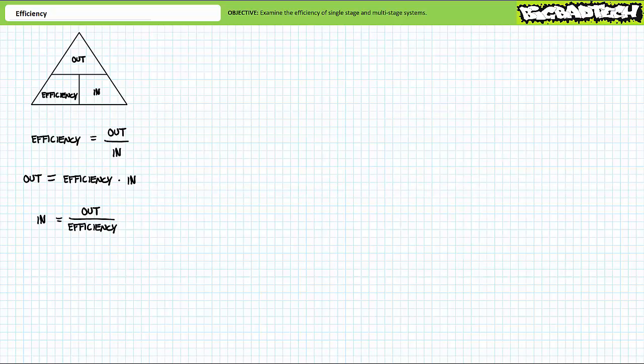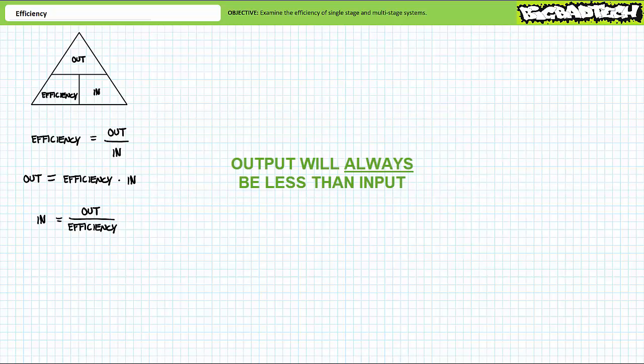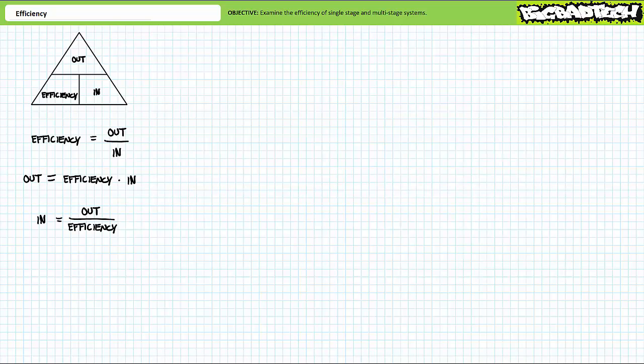Given that a portion of input is always misdirected towards losses, useful output will always be less than input, never greater. If your calculations result in output greater than input or an efficiency greater than 100%, you are doing it wrong and need to reassess your data. Given that energy in a closed system can neither be created nor destroyed but only changed in form, all incoming energy is converted into something, so we must clearly delineate between what is considered useful output and what is considered a loss.